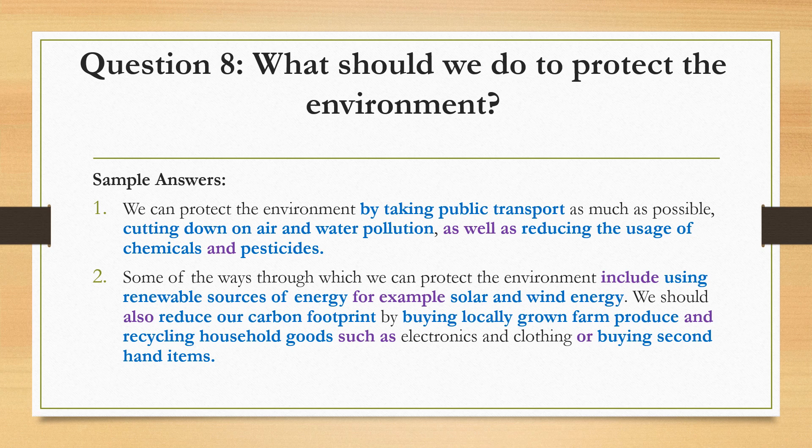Sample answer 2: Some of the ways through which we can protect the environment include using renewable sources of energy, for example solar and wind energy. We should also reduce our carbon footprint by buying locally grown farm produce and recycling household goods such as electronics and clothing, or buying second-hand items. Renewable energy can be replenished, and buying locally reduces transport emissions. Buying second-hand avoids cutting down trees to make new furniture.